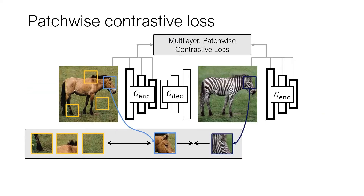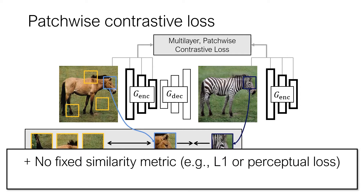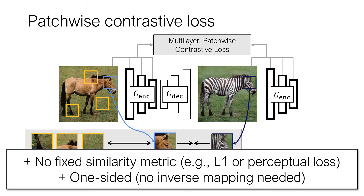To project the patches into the embedding space, we use the first half of the generator as our encoder. Moreover, we found that computing the contrastive loss at multiple layers is important for stable training. The detailed ablation study can be found in our paper. In the end, our method replaces the fixed pixel-based cycle loss. Moreover, our method doesn't require a generator or discriminator in the inverse direction. As a result, our method can be trained faster than CycleGAN with a smaller memory footprint.